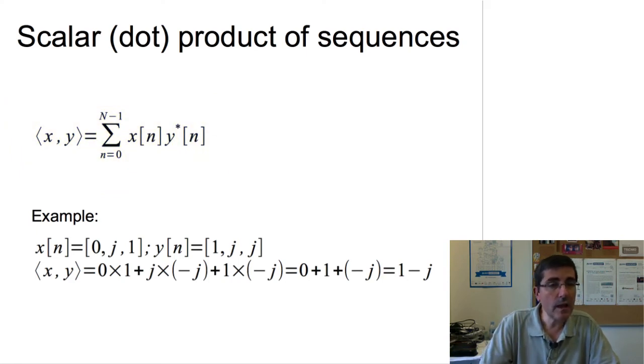And we can show it in an example. So, if we have an example, x of n, a simple sequence, and y of n, another simple sequence, complex sequences, their dot product will be the point-to-point multiplication of these two sequences. However, the second sequence is conjugated. So, we see here the minus j of the second sequence because we conjugated the j of the second sequence. And then, if we do the whole operation, we obtain a number. So, the scalar product means that we return a single number after doing the operation with two sequences.